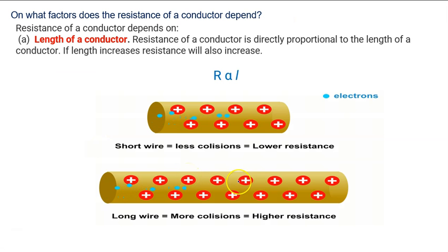If a wire is very short in length, then there is less collision, so lower resistance. If there is a long wire, there is more collision and higher resistance.